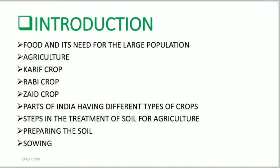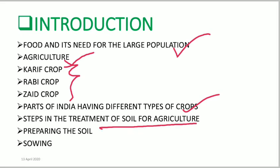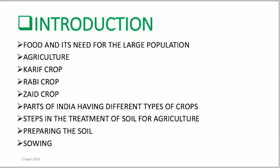Let's have a look at the first slides. We will cover topics like food and its need for the large population, agriculture, types of crops — that is Kharif, Rabi, and Zaid crops — then different types of crops in different states of India, and the steps needed for treatment of the soil. We will cover the first two steps of agriculture: preparation of soil and sowing of seeds.